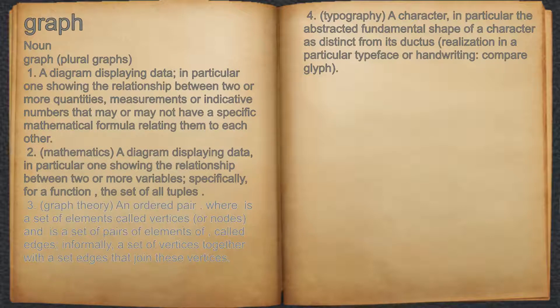3. An ordered pair, where is a set of elements called vertices, or nodes, and is a set of pairs of elements of, called edges. Informally, a set of vertices together with a set of edges that join these vertices.